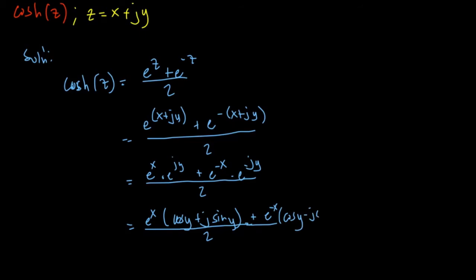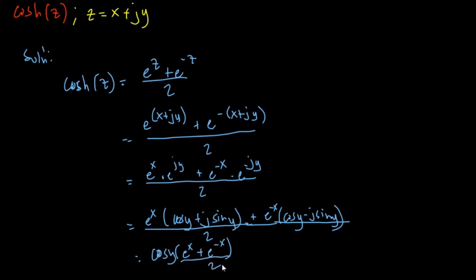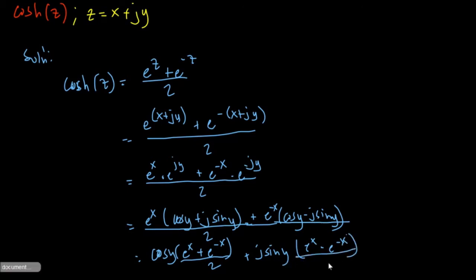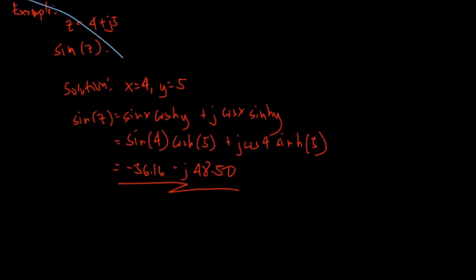Now combining like terms: grouping all the cosine Y terms, we have cosine Y times E to the X plus E to the negative X, and grouping the sine Y terms, we have J sine Y times E to the X minus E to the negative X, all over 2.